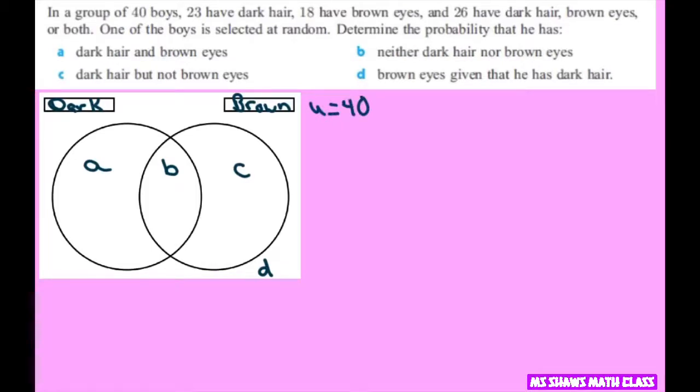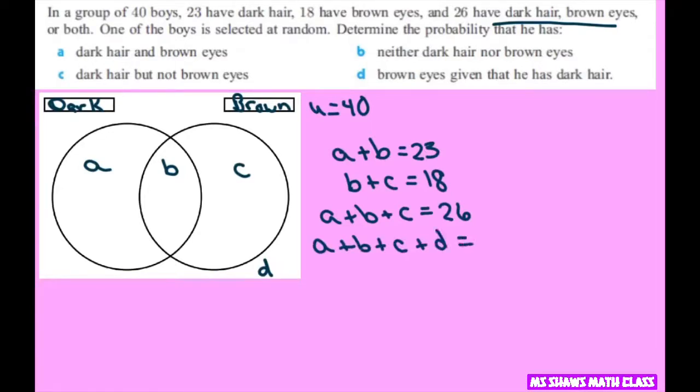So to determine this, we're going to write out the system of equations. So we're going to say A plus B equals the dark hair, which is 23. And the brown eyes, that's going to be B plus C equals the brown eyes, which is 18. And then we have A plus B plus C equals dark hair, brown eyes, or both. And that's going to be 26. And then we have all of this A plus B plus C plus D equals 40.